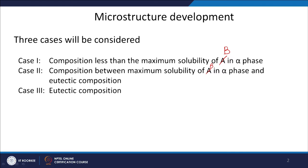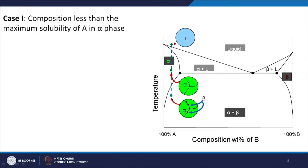We will consider these three cases and try to understand what type of microstructures will be there. This is our eutectic phase diagram. You have the melting point of A here, the melting point of B here, and the eutectic point E here, where liquid is transforming into alpha and beta phases. You have the alpha phase, the beta phase, and the alpha plus beta phase region. Between any two phases you should have a two-phase mixture — between alpha and liquid you have alpha plus liquid, and between beta and liquid you have beta plus liquid. The eutectic reaction takes place at point E.